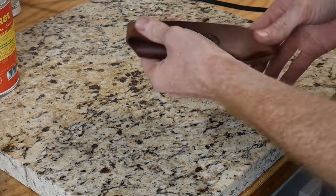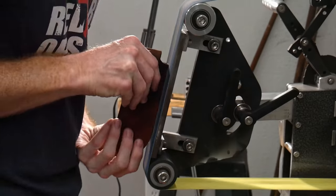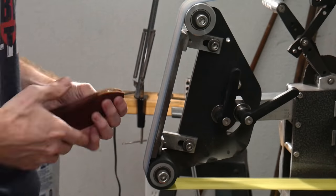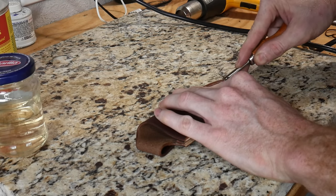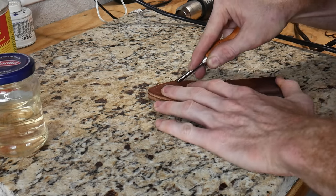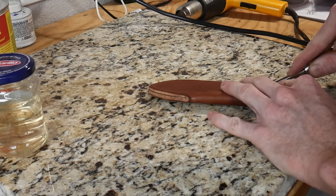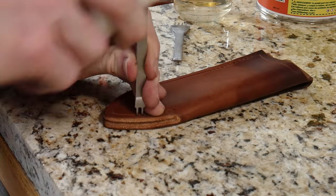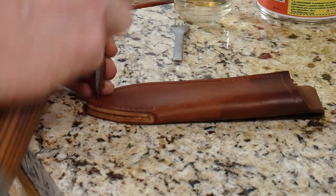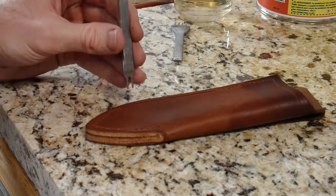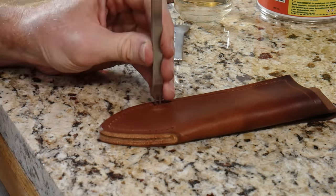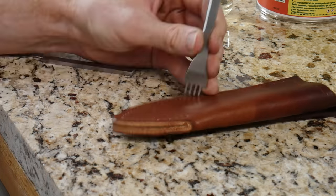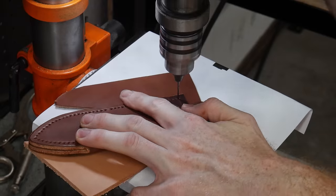When gluing up the sheath, I take great care in lining up all the edges and then head over to the belt sander to level these edges. I then use a stitch groover to groove in my stitch line so that my stitches will be recessed into the sheath. The next steps are the same ones I use with the belt loop. I use my cheap pricking irons to mark off my hole spacing. I use a needle and a drill press to press through the three layers of leather, and then I stitch the sheath with wax thread and a saddle stitch.